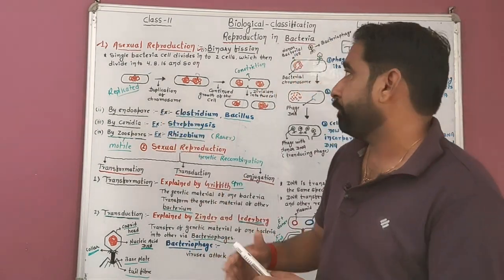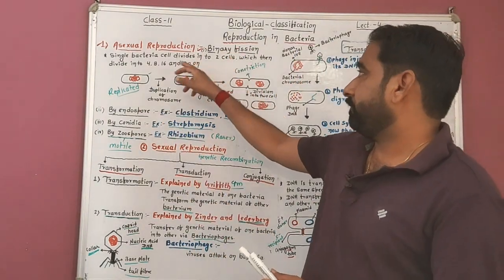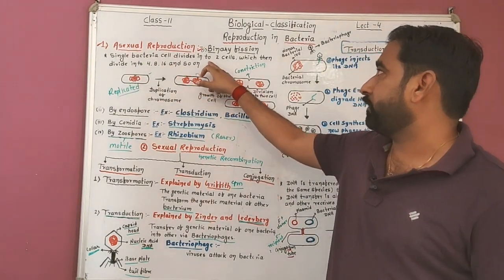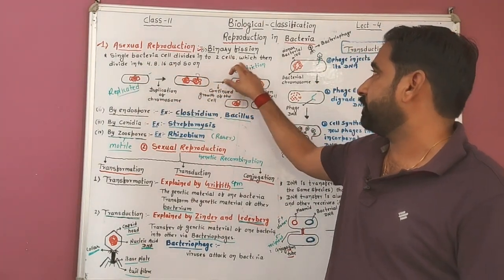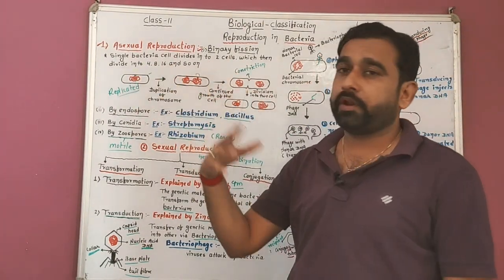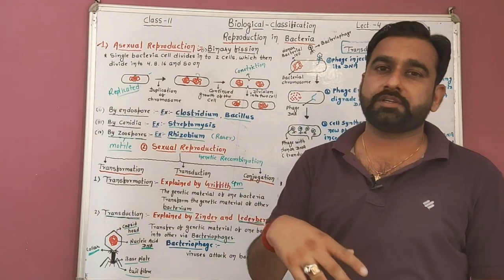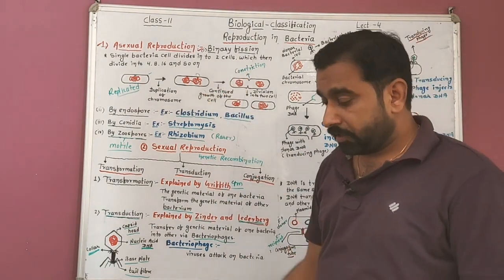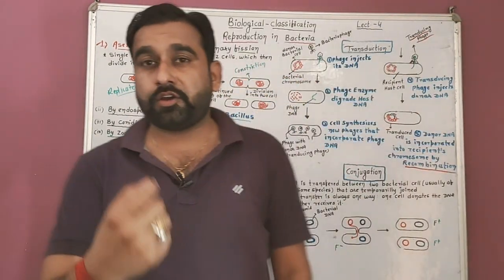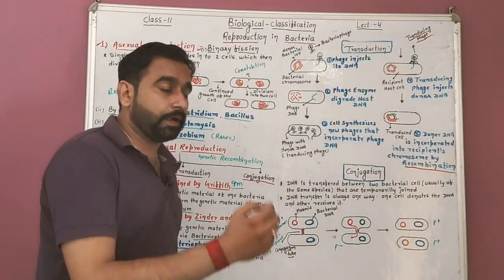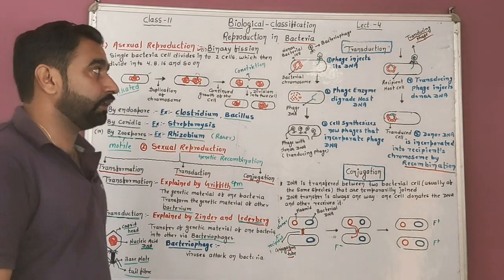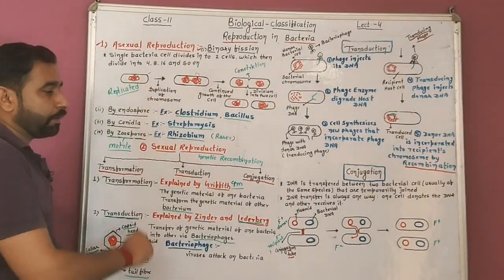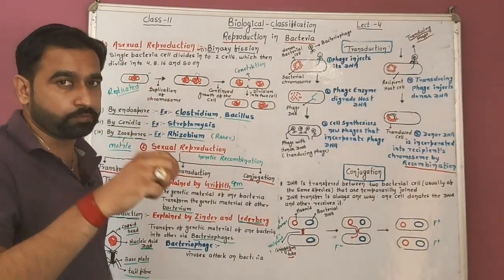Let's see how binary fission occurs in bacteria. A single bacterial cell divides into two cells, which then divide into four, eight, sixteen and so on. The genetic material of bacteria first binds with the mesosome.